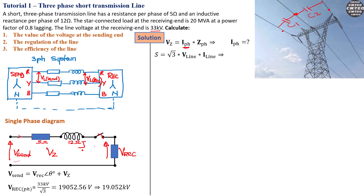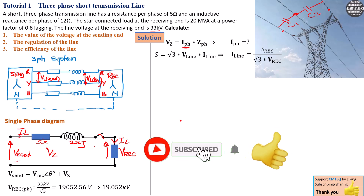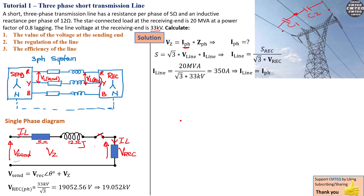Because this is a series circuit, the current flowing through the line impedance is the same current flowing at the receiving end. The line current is S at the receiving end divided by the square root of 3 times V line at the receiving end — not the per-phase voltage. So we calculate I_line as 20 MVA divided by √3 times 33 kilovolts, which gives us 350 amps.